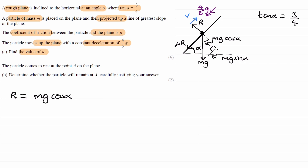So r is equal to mg cos alpha. Parallel to the slope there is a resultant force, acting down the slope. We have two forces in that direction: the frictional force mu r, and the component of weight mg sin alpha, which also acts down the slope. Adding those together: mu r plus mg sin alpha is the resultant force, and we equate it to ma.